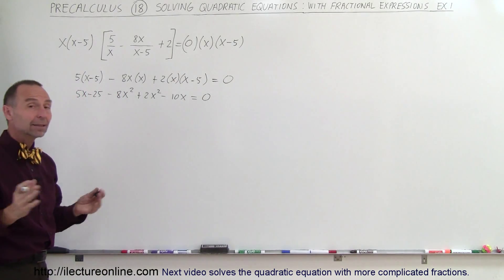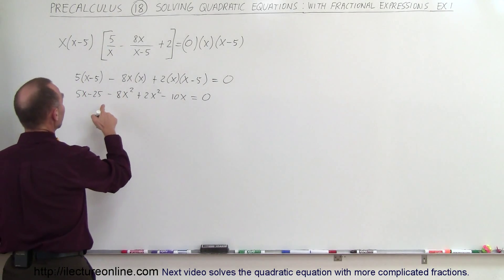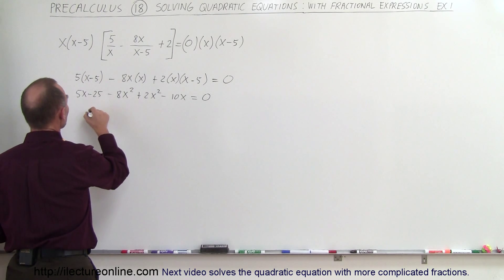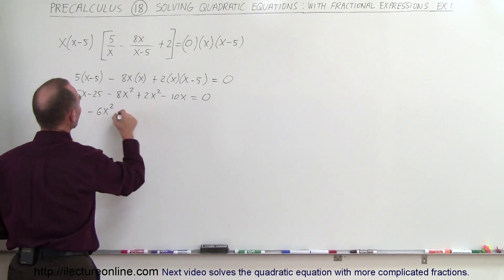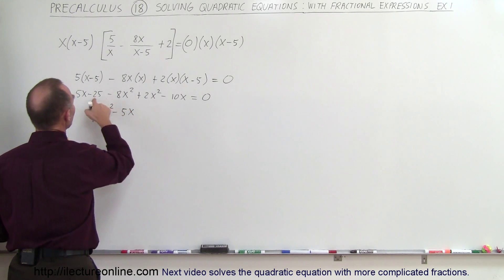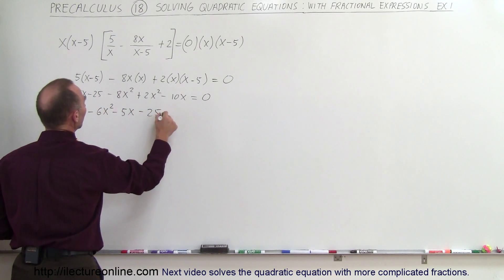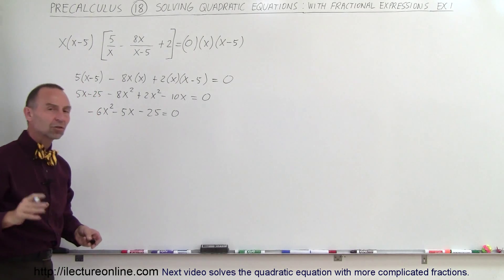And now combining like terms, we get minus 8 plus 2, that's minus 6x squared, 5x minus 10x is minus 5x, and minus 25 equals 0.